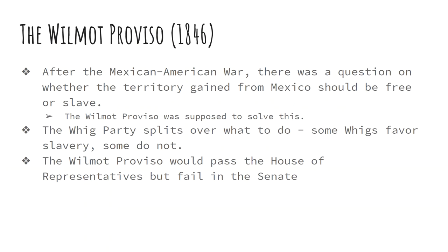There's this event called the Wilmot Proviso. This is going to be a discussion about what to do with the land that the United States wins from Mexico. This is called the Mexican Cession — C-E-S-S-I-O-N. That's the territory we win from Mexico, which is going to become part of California, Nevada, Utah, Arizona, and New Mexico. It's a big amount of territory, and the biggest question is: will this land be free territory or slave territory? That's the million-dollar question.